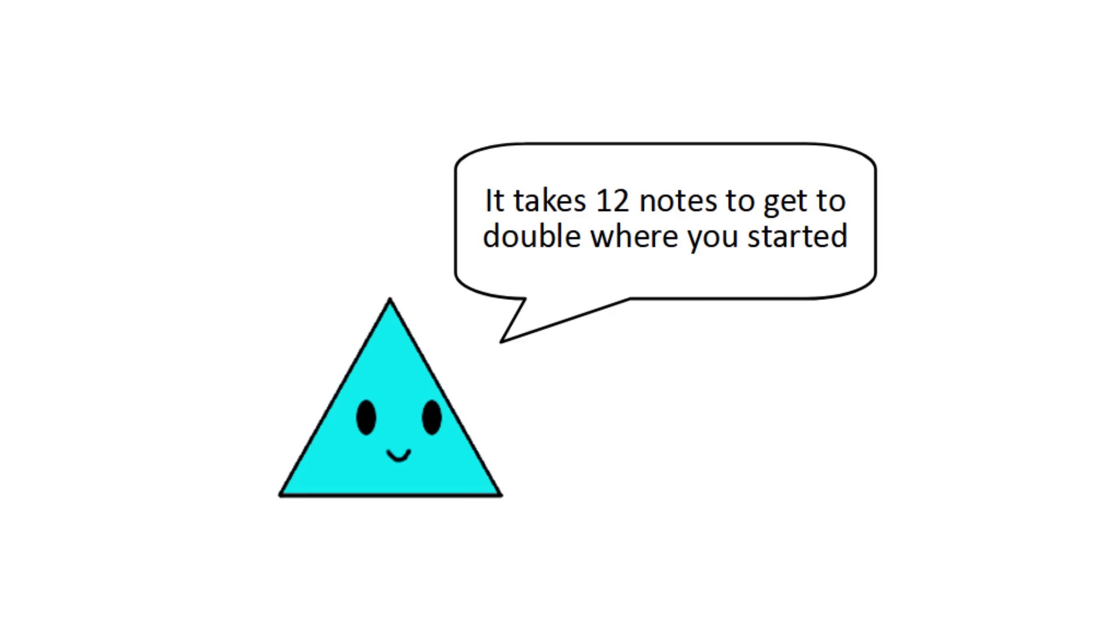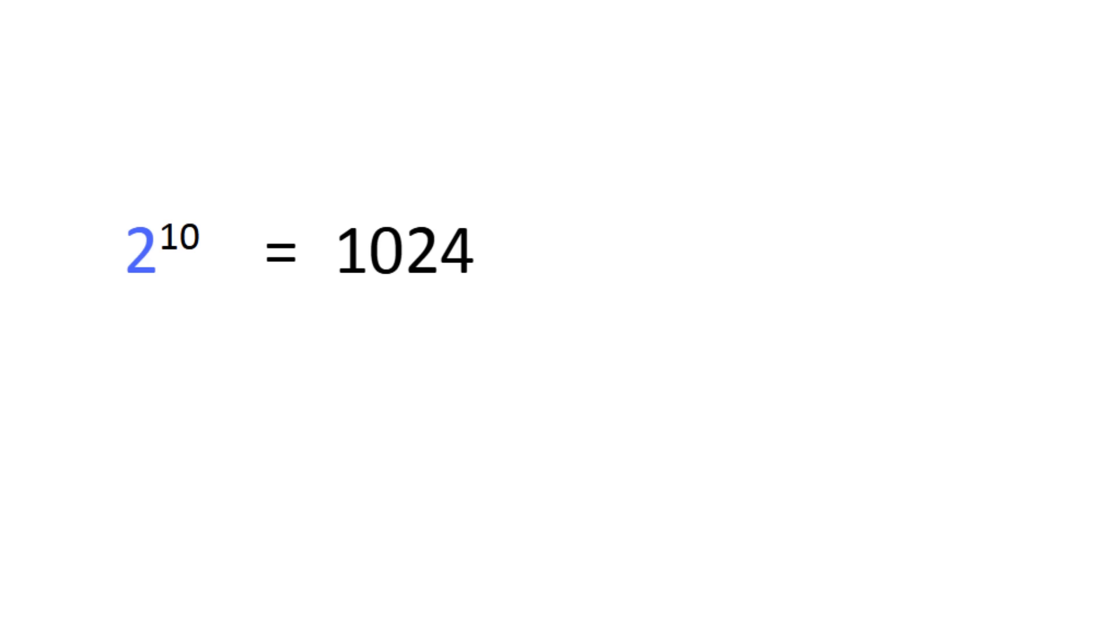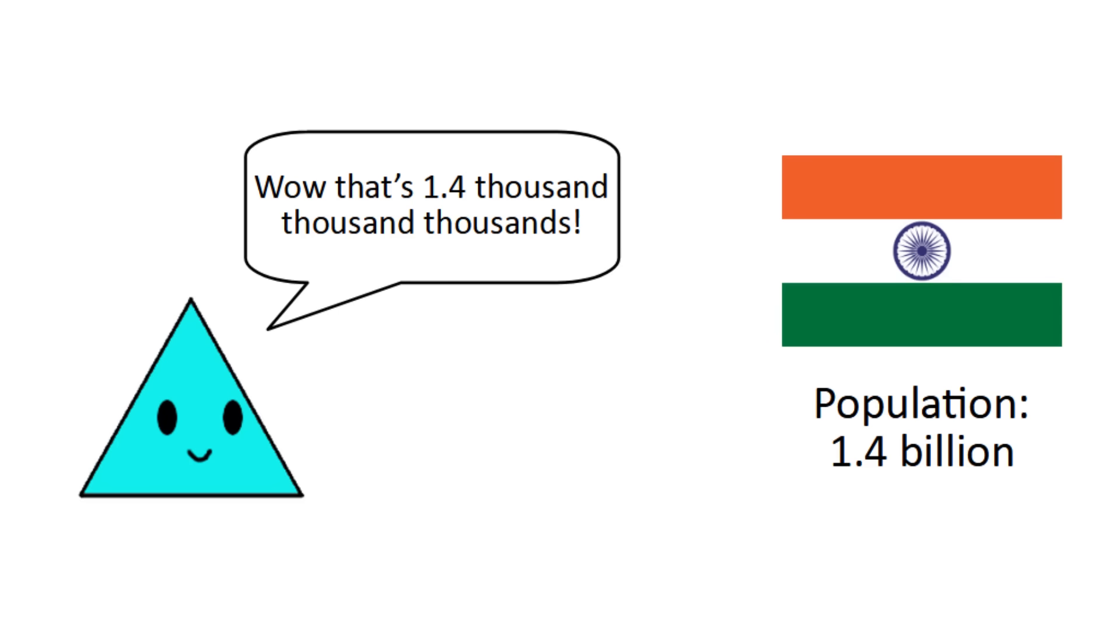Here's another useful one. 2 to the 10 is 1024, and 10 cubed is 1000. Now why is this one useful? Well, human intuition tends to rely on powers of 10, and especially of 1000.